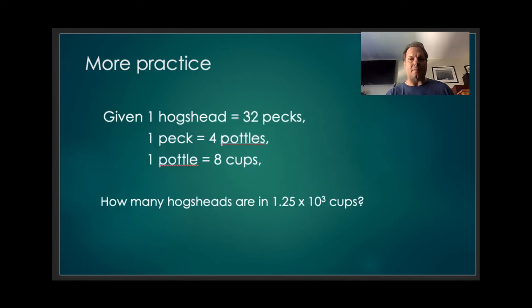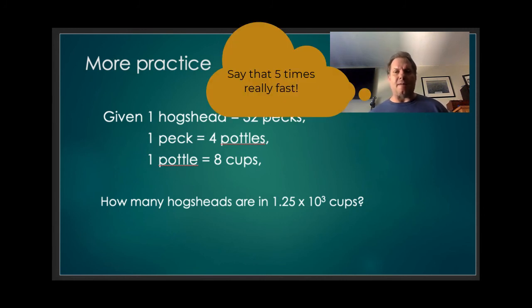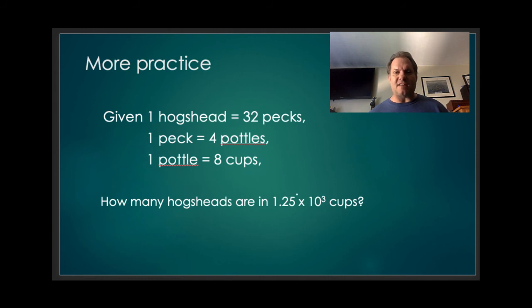Let's take a look at one more problem. These are actually true measurements. It's kind of a weird system. Given that one hogshead is 32 pecks, one peck is four pottles, four pottles is eight cups. How many hogsheads are in 1.25 times 10 to the third cups? If we think about that, we're sliding our decimal three times over, so this is 1,250 cups. I start with my input value, and I make sure I write my units down.